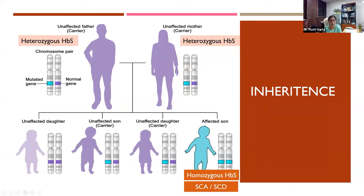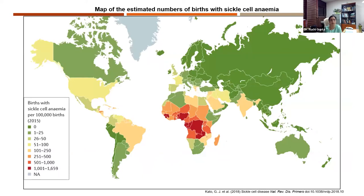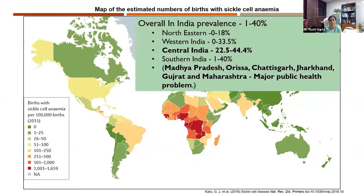Sickle cell disease is used more loosely for all disorders co-inherited with the sickle cell mutation that result in sickling, whereas sickle cell anemia specifically refers to the homozygous mutation. This is a global health problem that appears to have arisen in Africa and is very prevalent in sub-Saharan Africa, the Mediterranean, the Middle East, and Asia. In India, the prevalence is as high as 40% in some states, particularly in central India — Madhya Pradesh, Odisha, Chhattisgarh, Jharkhand, and Gujarat.